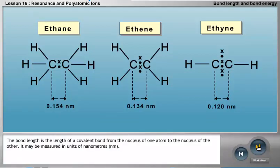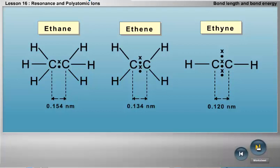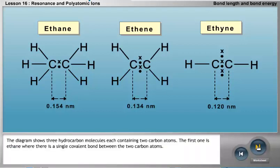The bond length is the length of a covalent bond from the nucleus of one atom to the nucleus of the other. It may be measured in units of nanometers. The diagram shows three hydrocarbon molecules, each containing two carbon atoms.